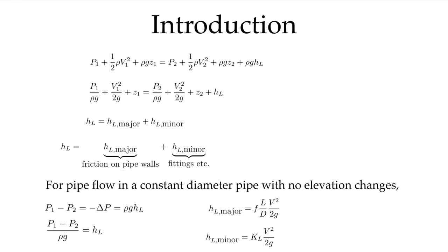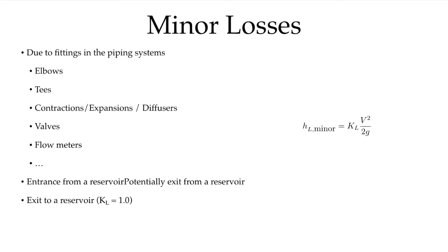Those minor losses come about due to all the other things on our piping systems: pipes changing diameters, elbows, T's or branches, diffusers distributing air into a room, contractions to smaller pipes, expansions to larger pipes, various kinds of valves, flow meters, and other instrumentation. Basically, anything that deviates from straight flow in a pipe where we have friction losses is going to give us minor losses.